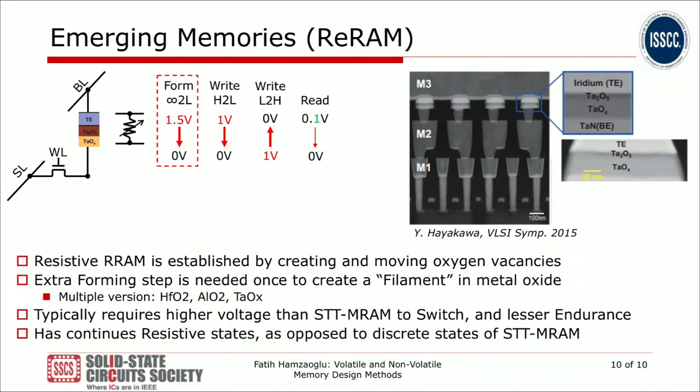RRAM, or resistive RAM, has a circuit operation very similar to STT-MRAM — again one transistor and one resistor. The RRAM device is in the back-end and the transistor is in the front-end. The device is quite different though — it operates through an oxide element; tantalum oxide is shown here but hafnium oxide versions also exist. Passing current from top to bottom electrode or vice versa writes a 1 or 0 as high and low resistance states, and a small voltage is applied to read.